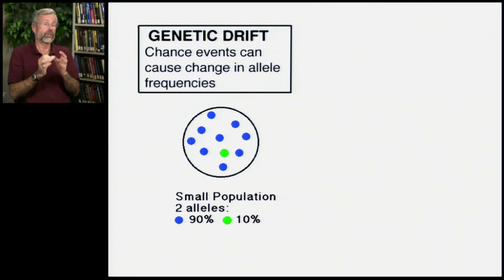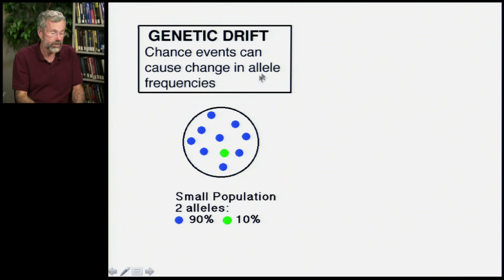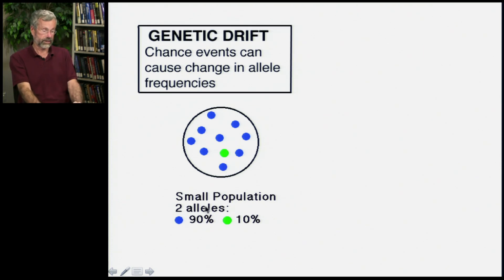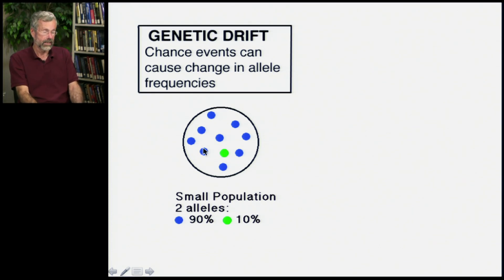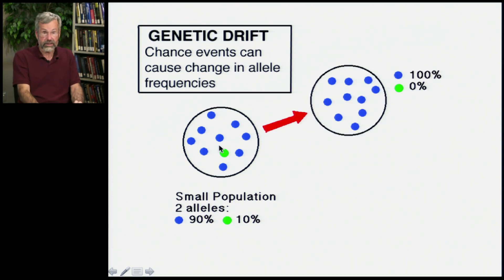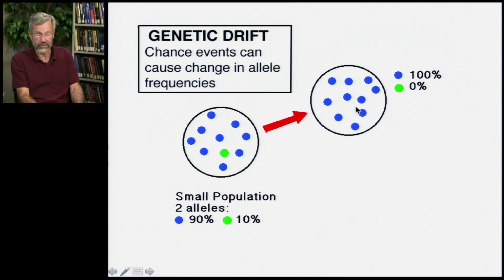Genetic drift says: we've got a really small population, and as long as this population stays small, chance events can cause a change in allele frequencies. Here we have a small population with five individuals and ten total alleles. One of them is a heterozygote with one green allele and one blue — everybody else is homozygous blue. By chance, what if that heterozygote didn't have any offspring? Now the green allele is lost altogether — a change from 90% blue to 100% blue in one generation.